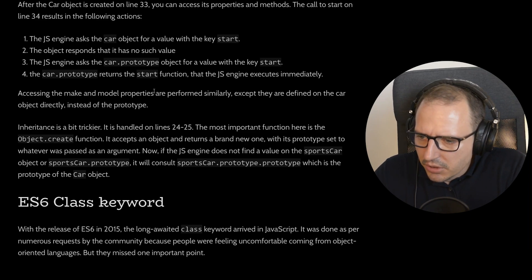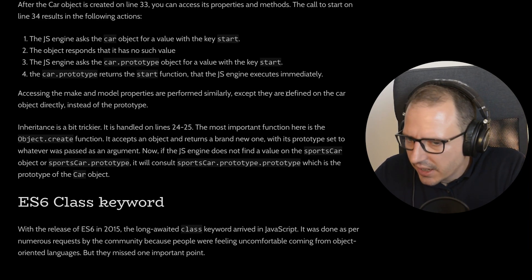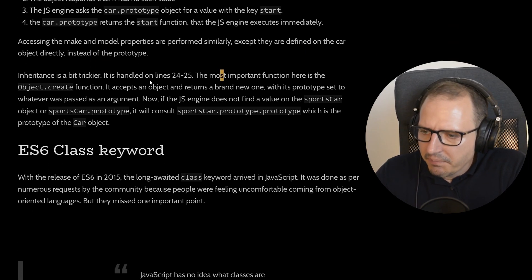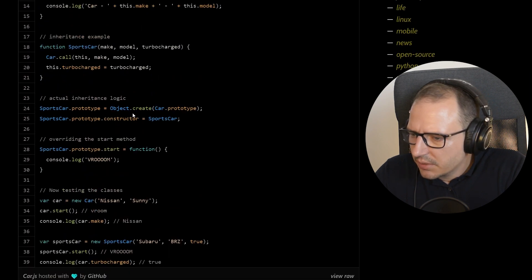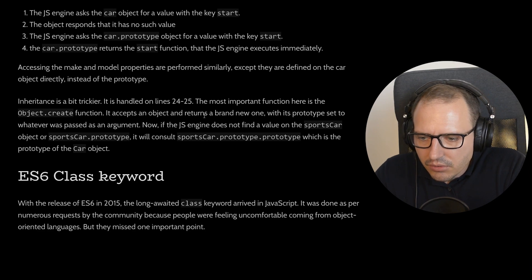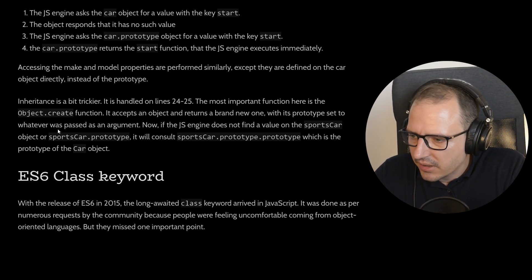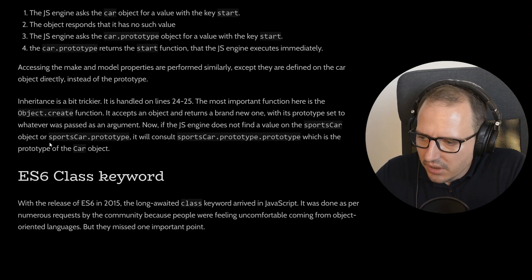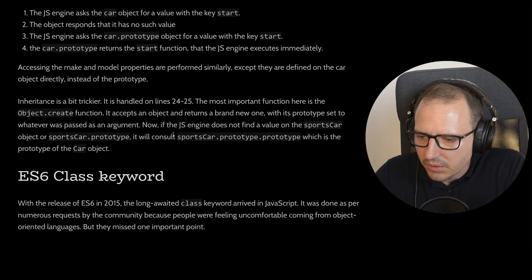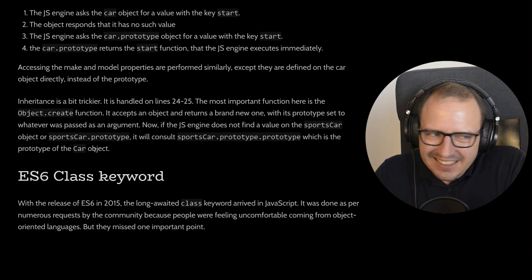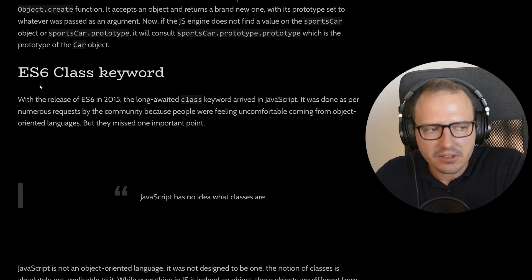Accessing make and model properties works similarly, except they're defined on the Car object directly rather than on the prototype. Inheritance is a bit trickier. The most important function here is Object.create — it accepts an object and returns a brand new one with its prototype set to whatever was passed. So if the JS engine doesn't find a value on the SportsCar object or SportsCar's prototype, it will consult SportsCar's prototype's prototype, which is the Car object's prototype.